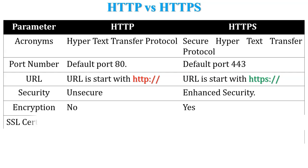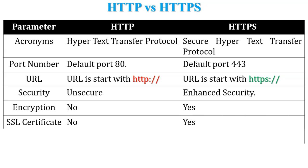The next parameter is SSL certificate. HTTP does not use an SSL certificate. HTTPS uses an SSL certificate to provide security — HTTPS means HTTP plus SSL equals HTTPS. An SSL certificate is a piece of code which is installed at the server side.